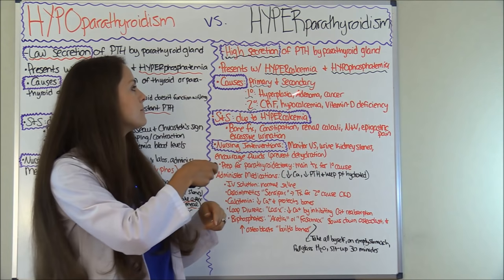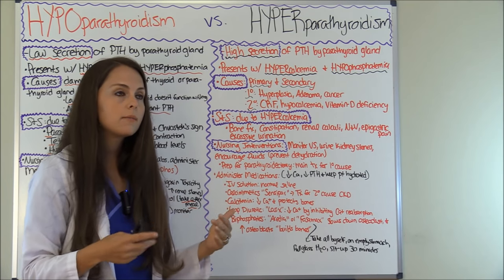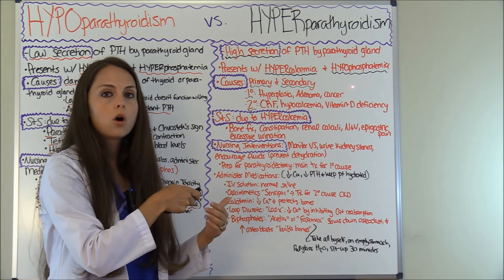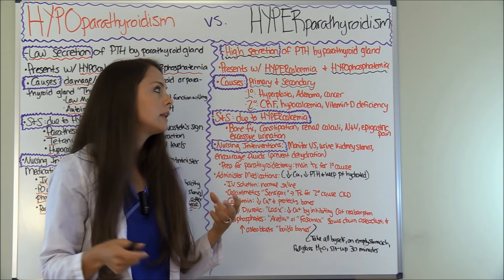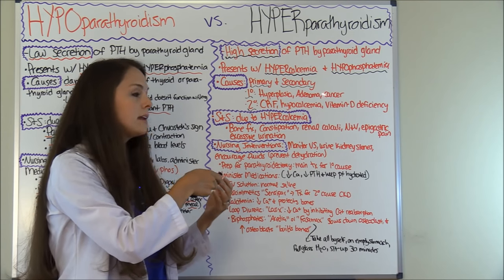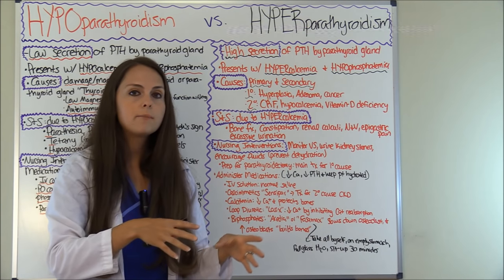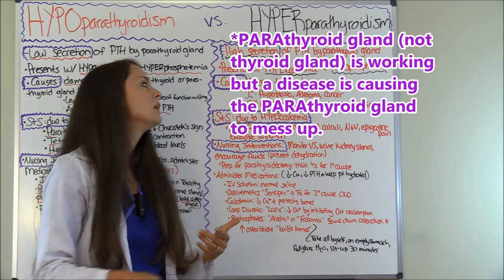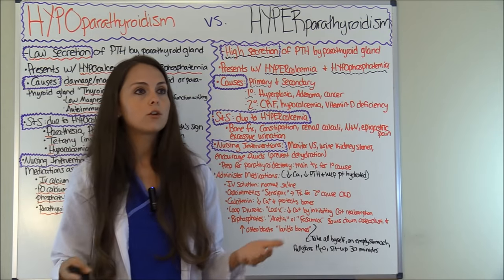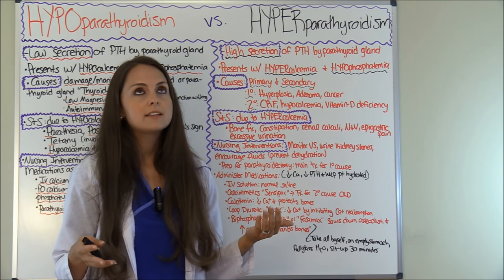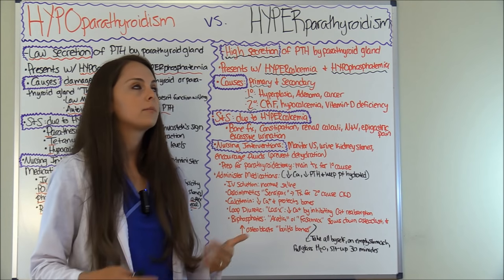Now let's look at the causes of hyperparathyroidism. This is divided into a primary cause and a secondary cause. The primary cause is something wrong with the gland itself — usually hyperplasia, which is enlargement of one of those four glands, or a tumor like an adenoma or a cancer. The secondary cause is a disease causing the parathyroid gland to malfunction, such as chronic renal failure because your kidneys aren't working appropriately, which will mess up your calcium levels and overwork your parathyroid, resulting in hyperparathyroidism.